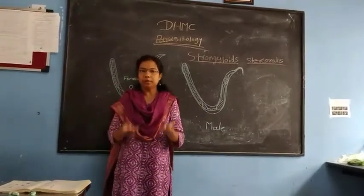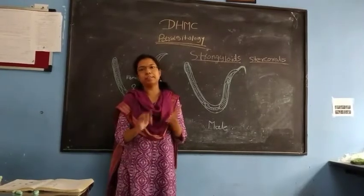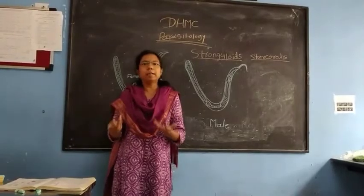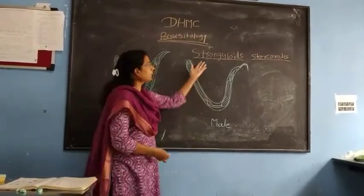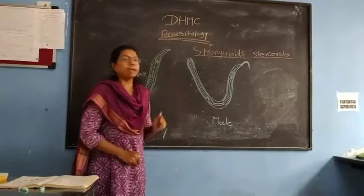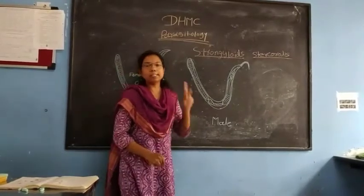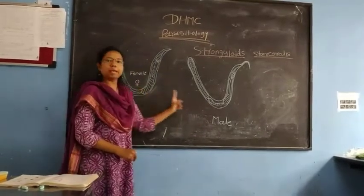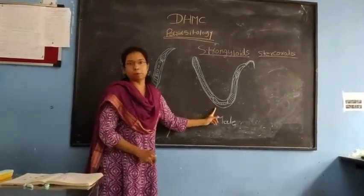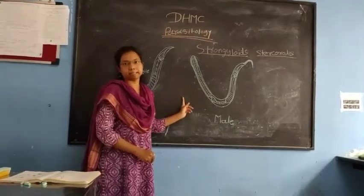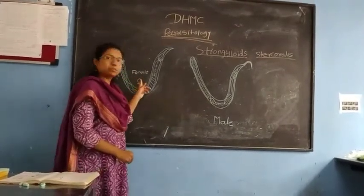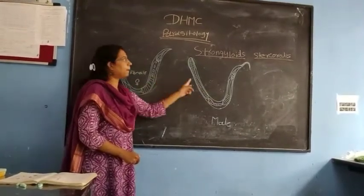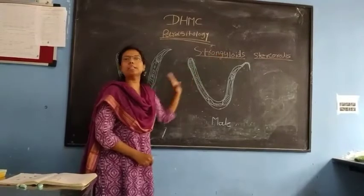In parasitology, the first feature we discuss is the morphological form — how the organism is characterized. S. stercoralis occurs in two different forms. One is the adult form. You can see the diagram of the adult form on the board. These diagrams show the adult form of the parasite — one form is female and one form is male.